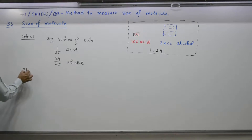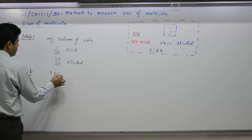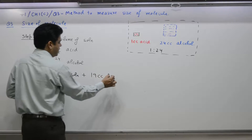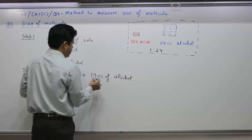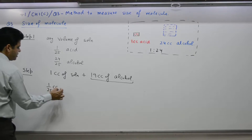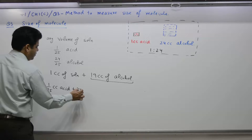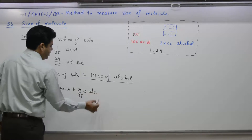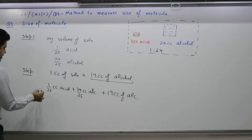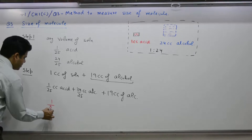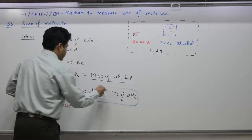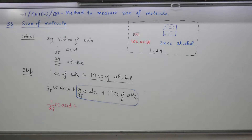Step 2: Take 1 cc of the above solution and 19 cc of fresh alcohol — extra alcohol, not from this mixture. 1 cc of this solution means 1/25 cc is acid plus 24/25 cc is alcohol, plus the additional 19 cc of alcohol.